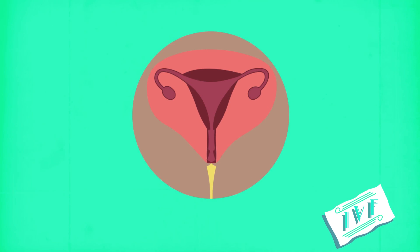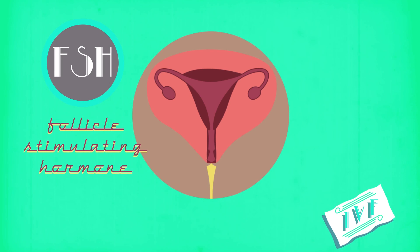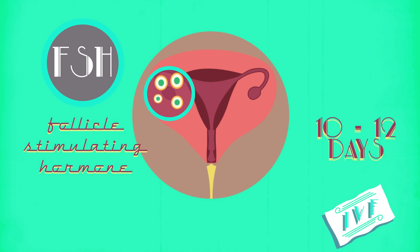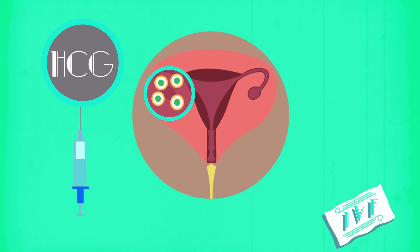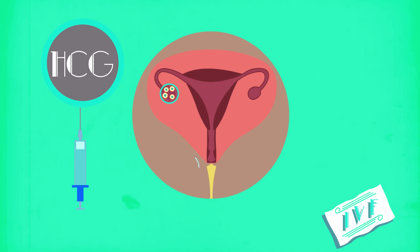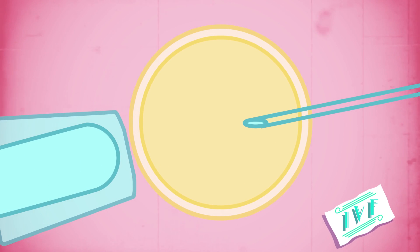The next step is to boost egg supply. Lots of follicle stimulating hormone FSH is injected for about 10 to 12 days. FSH increases the number of eggs the ovaries produce, meaning more eggs are available to be collected and fertilized. More eggs increases the chances of success. Once enough eggs have been produced, another hormone called HCG is injected. This causes the eggs to mature so they are ready to be released from the ovaries. The woman is then sedated and a very small pipette is used to remove the eggs.